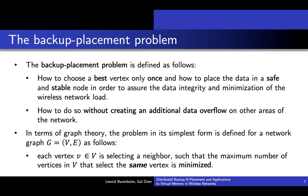So we finally reach the backup placement problem. This problem was introduced by Halderson, Koehler, Pat Shamir, and Ravitz in 2015. In terms of graph theory, the problem in its simplest form is defined for a network graph GVE as follows: each vertex V in V selects a neighbor such that the maximum number of vertices that select the same vertex is minimized. The problem is motivated by computer networks whose nodes may have memory faults and wish to store backup copies of their data at neighboring nodes, but neighboring nodes may incur faults or be overflowed as well. The number of nodes that select the same backup node should be minimized, so that if a backup node incurs a fault, the number of nodes that lose data is minimized.